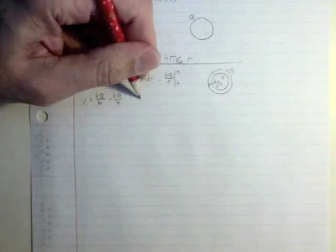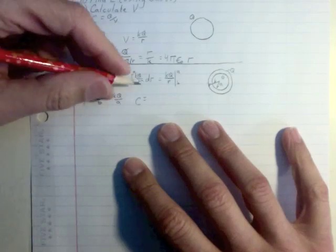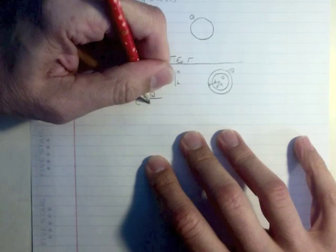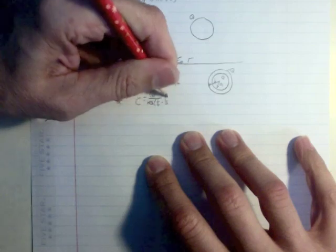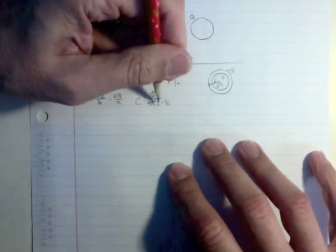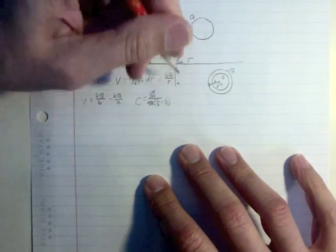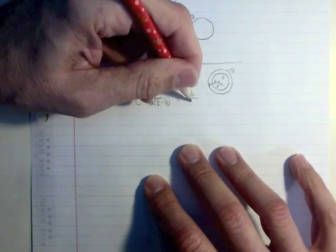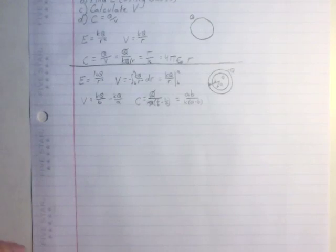And so the capacitance equals Q over KQ times 1 over B minus 1 over A. The Q's cancel. 1 over B minus 1 over A is A minus B over AB. I'm going to bring that to the top. AB over K times A minus B. There's your capacitance.